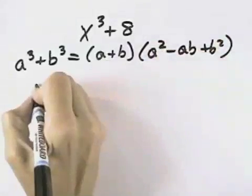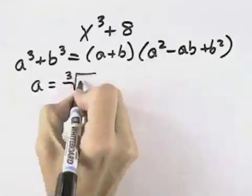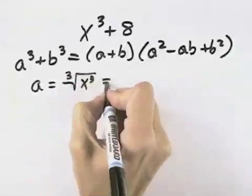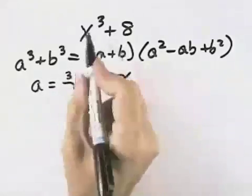That means we need to identify a. a will have to be the cube root of x³, so that when we cube it, we get x³. That means a is x, so that a³ is x³.